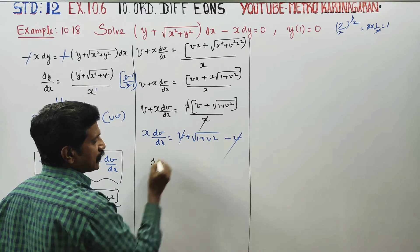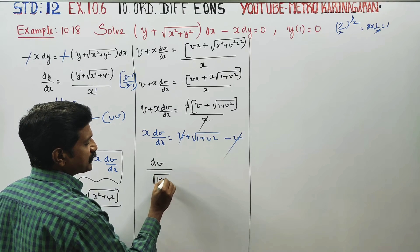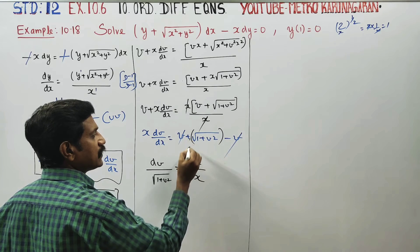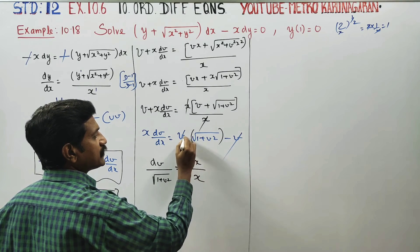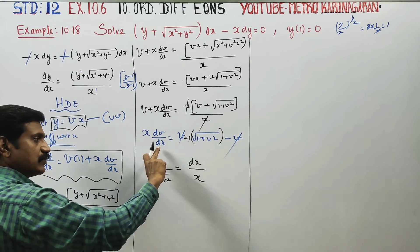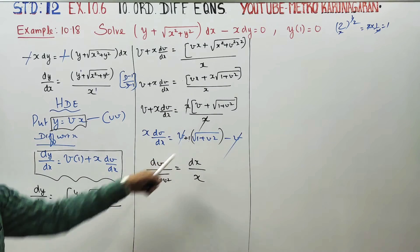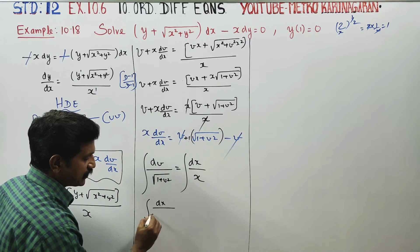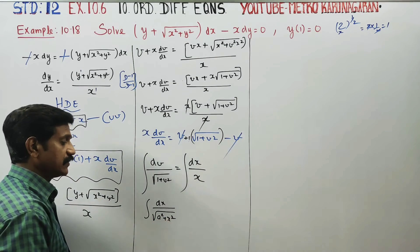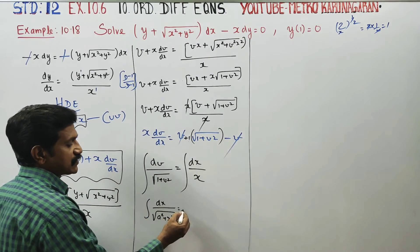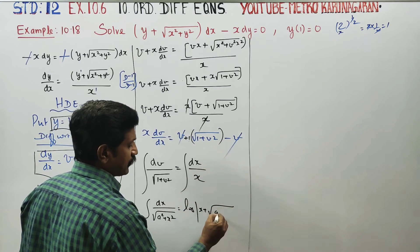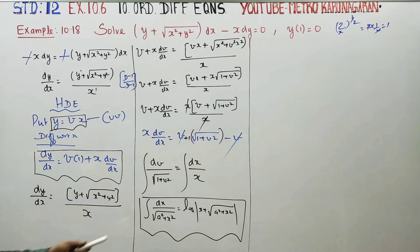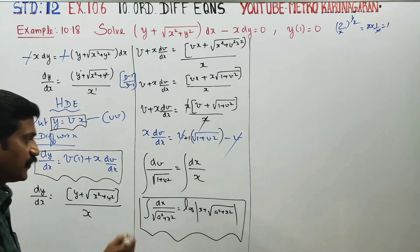Dividing by x, this gives dx by x. Integrate: the integration of dx by square root of a square plus x square is equal to logarithm of x plus root of a square plus x square — this is a ready-made formula.